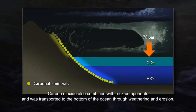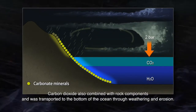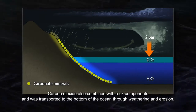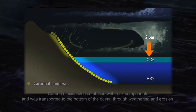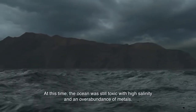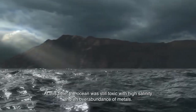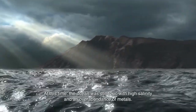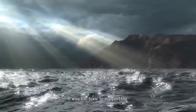Carbon dioxide also combined with rock components and was transported to the bottom of the ocean through weathering and erosion. At this time, the ocean was still toxic with a high salinity and an overabundance of metals. It was too toxic to support life.